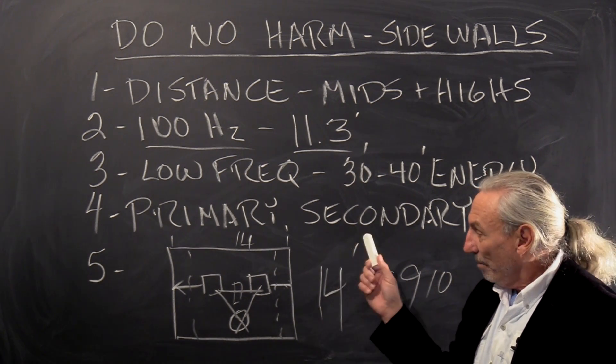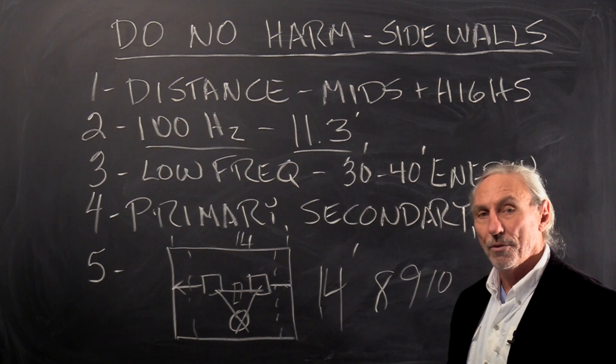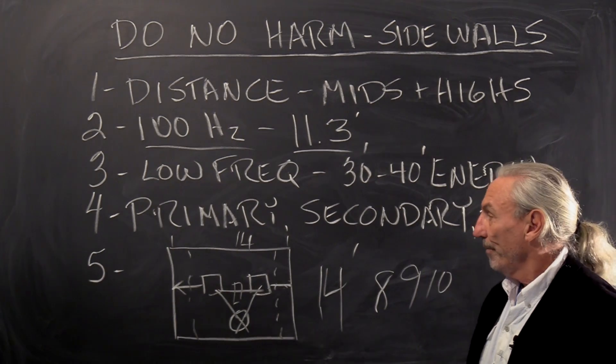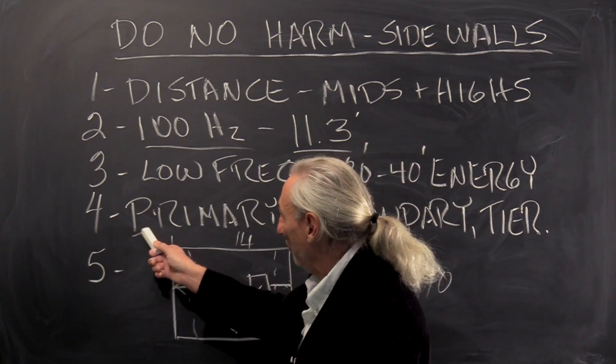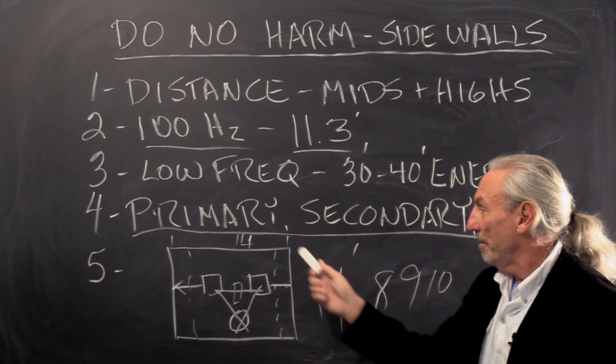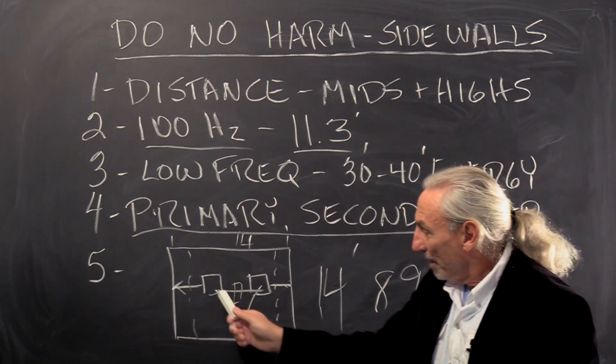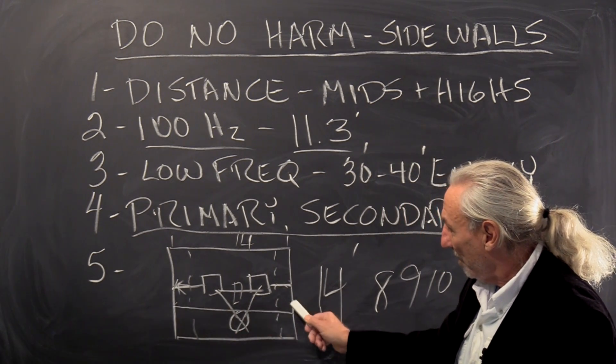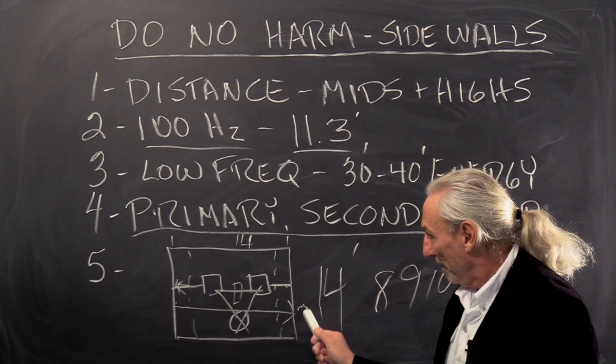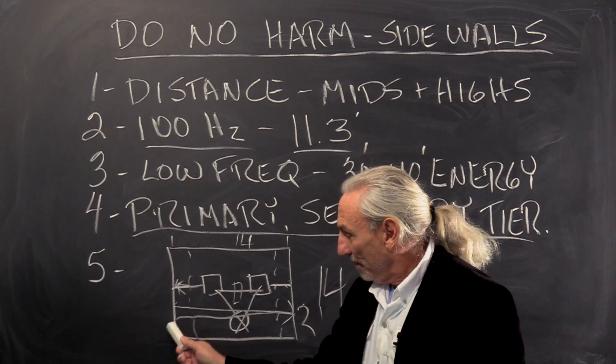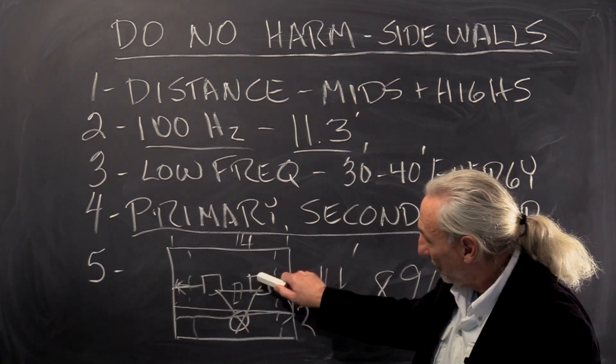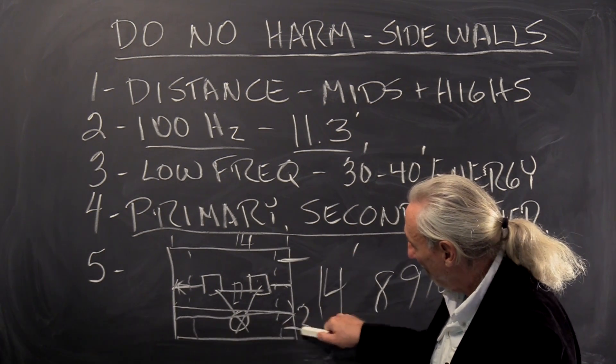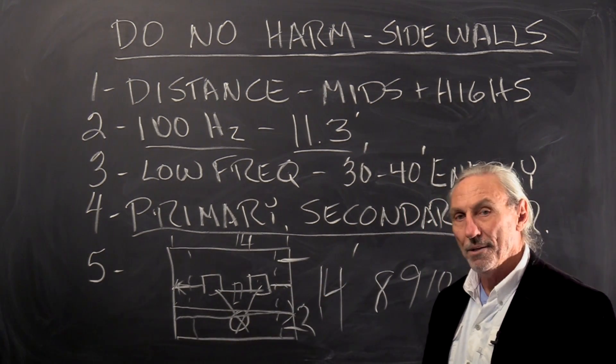Sidewalls have three reflections we have to be concerned about: primary, secondary, and tertiary. The primary strikes that wall, comes across to the second wall—that's the secondary reflection—then it goes back this way. All of this is occurring between the speakers and the listening position. That's why when we treat for middle and high frequency, we always treat from behind the speakers to behind the listening position.